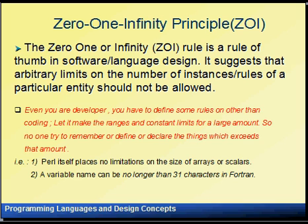In Perl you can declare any number of arrays, scalars, and allocate spaces freely. By contrast, early Fortran had only a 31-character variable length limit for variable declarations. In earlier stages coders had to remember those constraints, but now most modern languages support developers to freely implement their own logic without such restrictions, allowing them to define as many objects or classes as available memory permits.